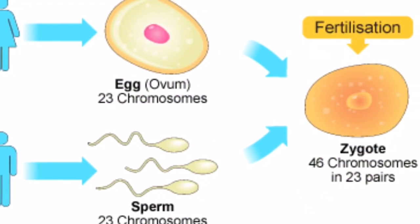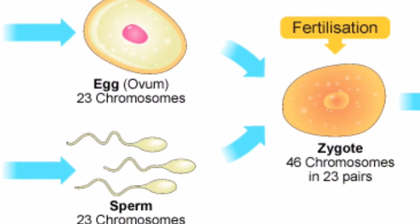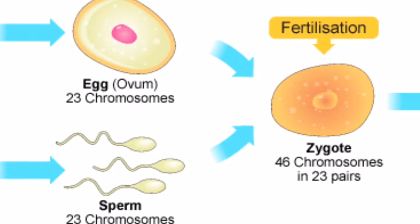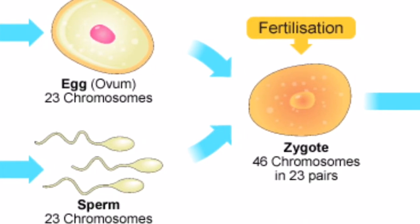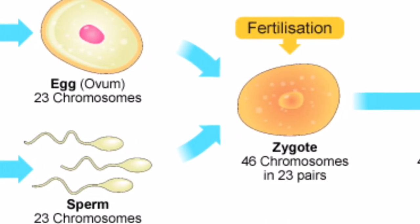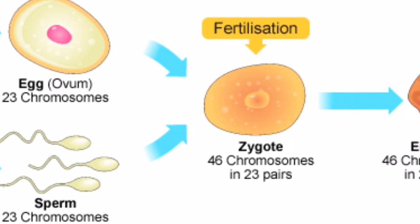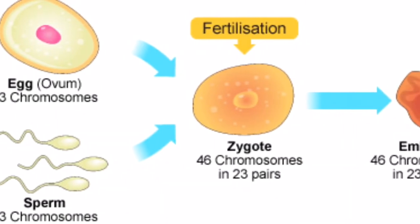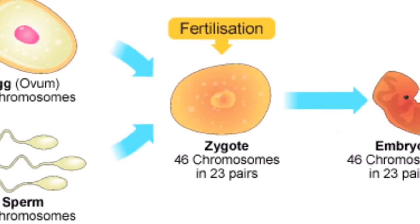Sexual reproduction occurs when two parents each contribute a sex cell to form a new organism, which is not identical to the parent. The new organism will have some traits from each of their parents, causing them to be diverse.